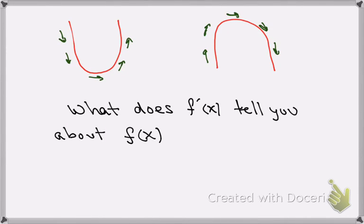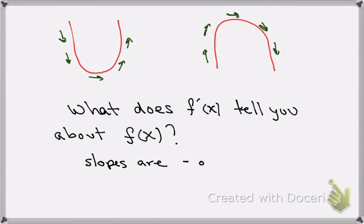What does f prime of x tell you about f of x? It is a derivative. What does it tell you about the slopes? From that you can determine if the slopes are negative or positive.